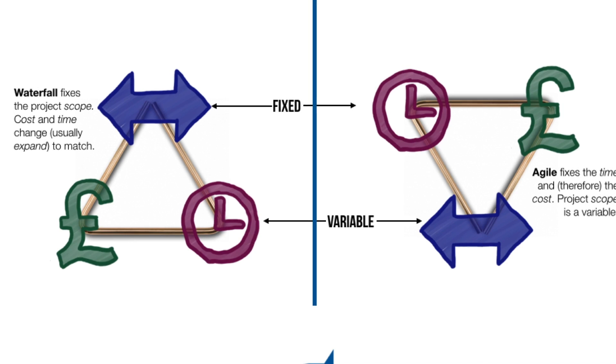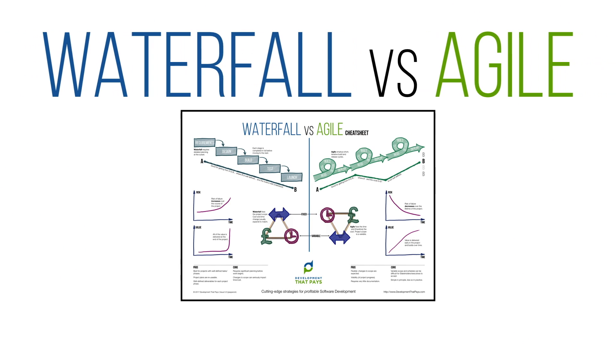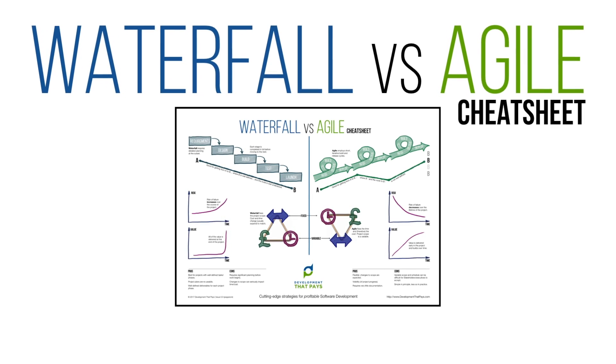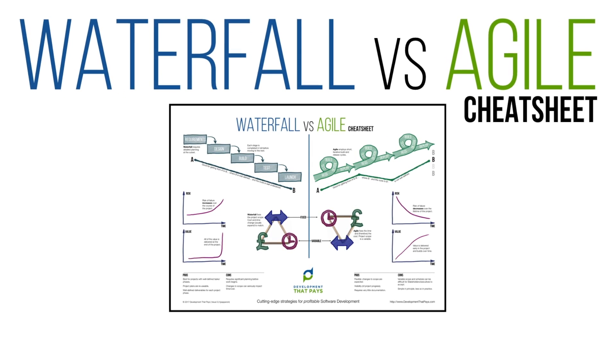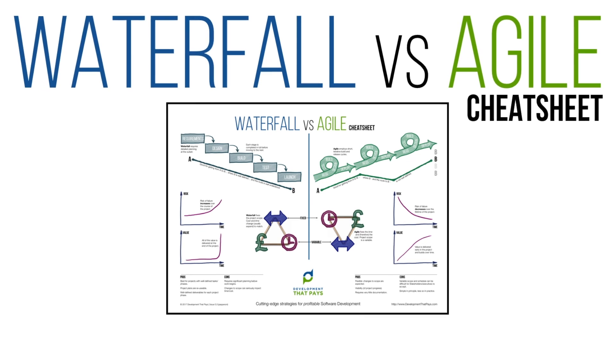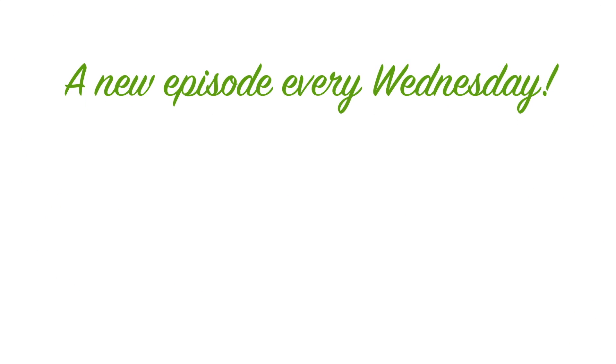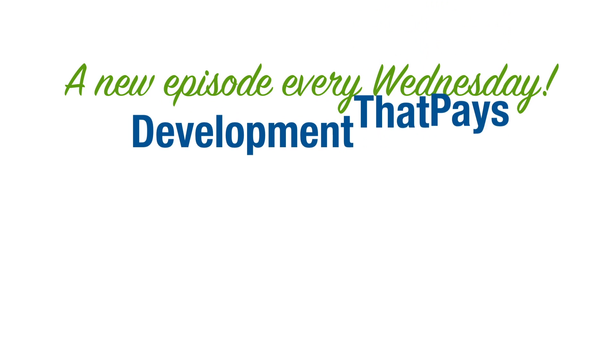The Iron Triangle is just one element of the Waterfall vs Agile Cheat Sheet. If you've yet to grab a copy, you'll find a link somewhere around this video — click the link, follow the instructions, and it's all yours. Thank you very much for watching. If you enjoyed this episode, please give it a thumbs up, share it with your network, and click the logo for a brand new episode every Wednesday. I look forward to seeing you next time — cheers for now.